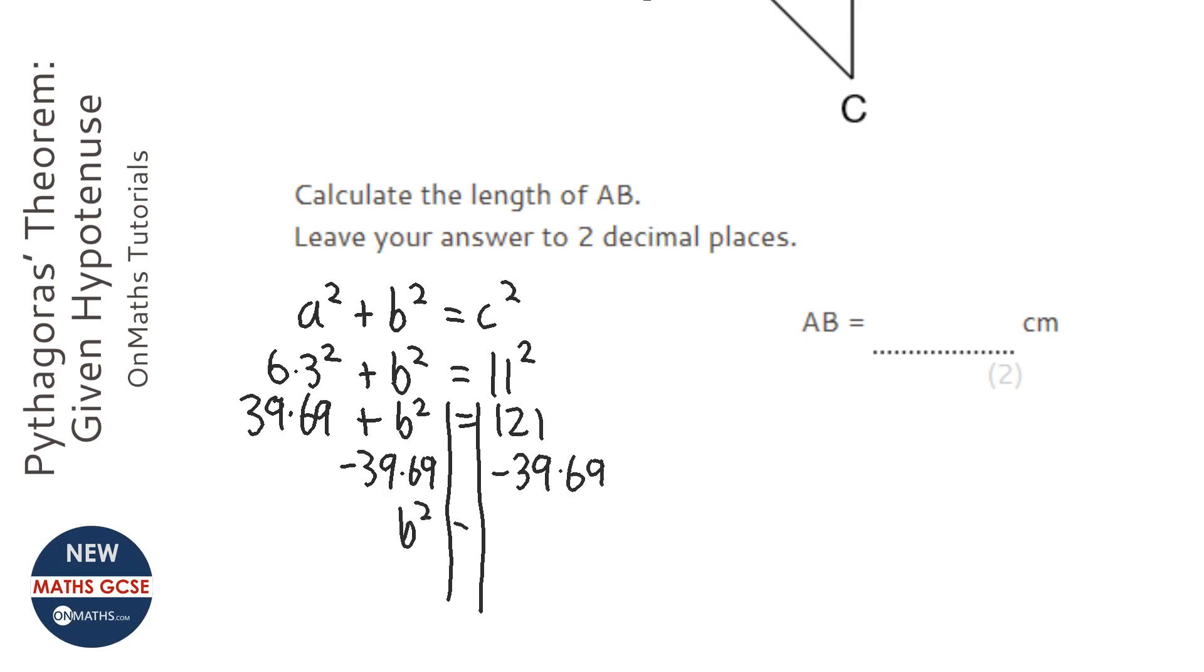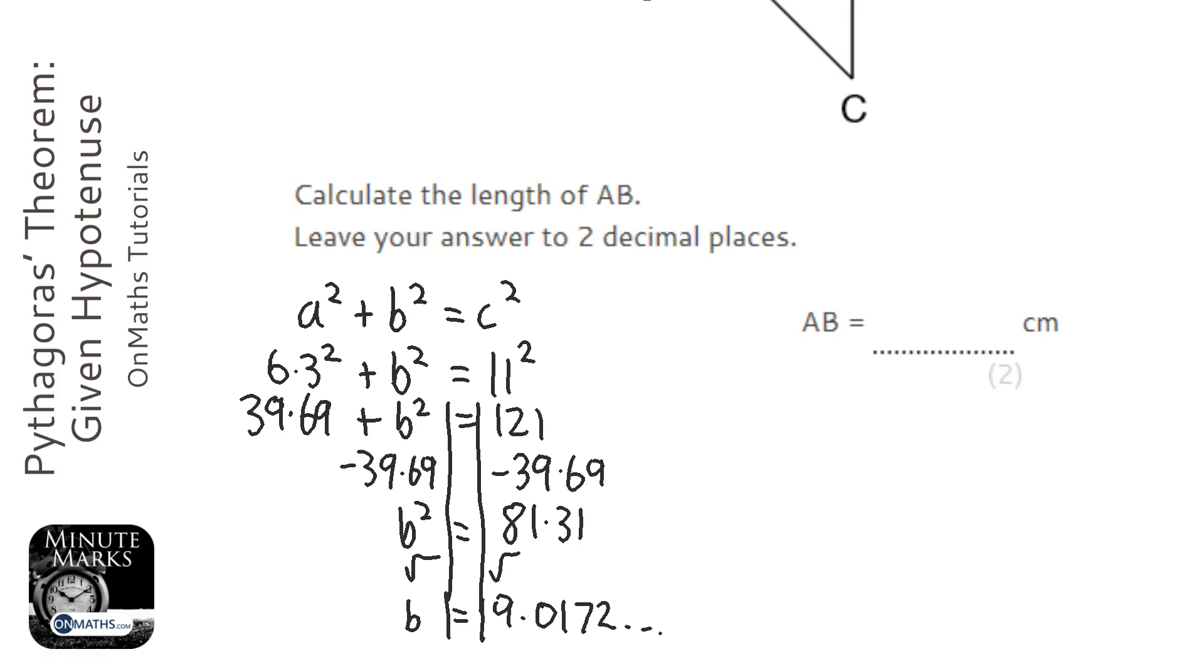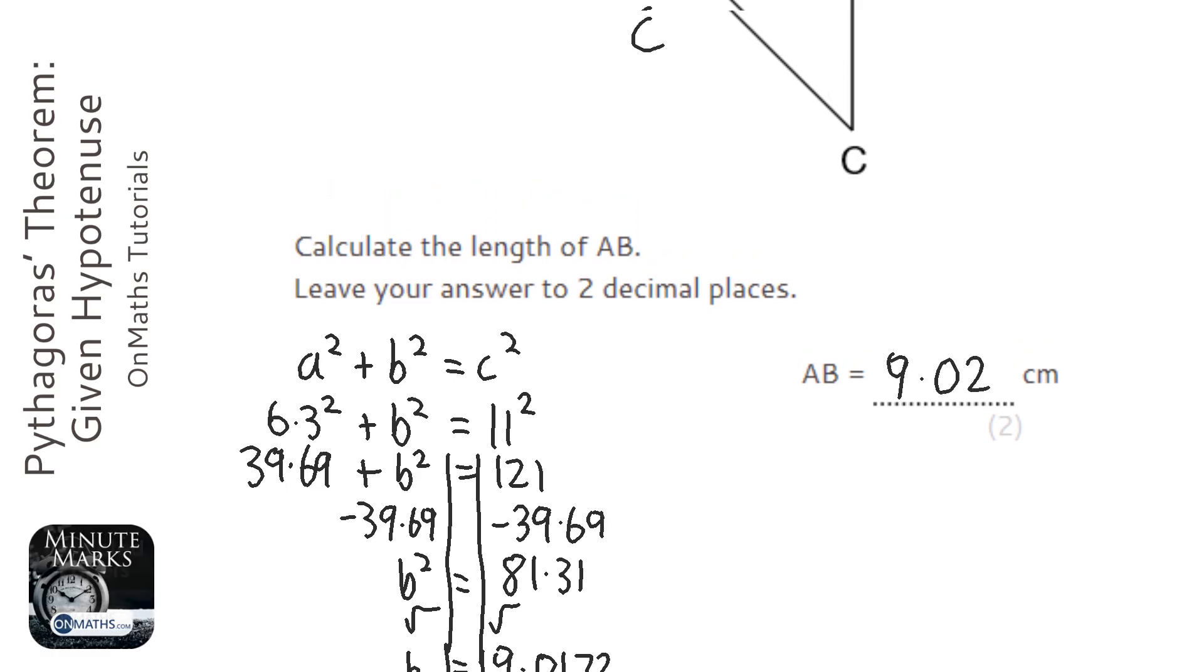So b squared equals, so 121 take away 39.69 is 81.31. And then I'm going to square root both sides, extend my lines a little bit, so I'm going to square root that answer. So b equals 9.0172 and so on. Rounded to two decimal places, 9.02 will be the answer.